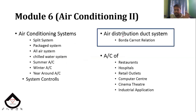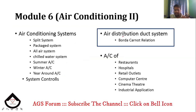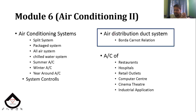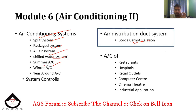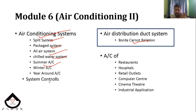Module 6 covers the air distribution duct system, which is a very complicated and large part. It includes all-air systems, chilled water systems, summer air conditioning, winter air conditioning, year-round air conditioning, and system controls. Applications include restaurants, hospitals, retail outlets, computer centers, theaters, and industrial applications. These are the 6 modules of RAC.